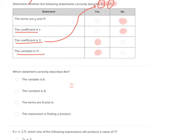Which statement describes 6m? The variable is 6. A variable is a letter that stands for a number, not a number. So that is not correct. The constant is 6. Is the 6 by itself? No. It is being multiplied by m. So it's not by itself.